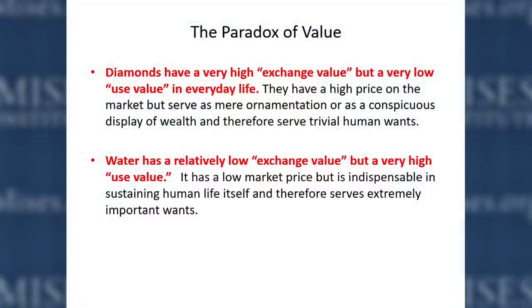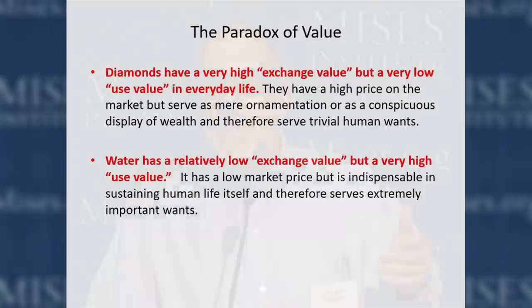Basically, diamonds have a very high exchange value — the price per carat is very high — but a low use value, since diamonds satisfy trivial wants like conspicuous consumption. On the other hand, water, which is absolutely essential to human life, has a very low price per gallon on the market. The classical school couldn't figure this out. They split value into two categories: exchange value, which is prices, and use value. They said we can explain prices without explaining use value — a major error. Science should have one law to explain the value of goods, not two different categories with totally different explanations.